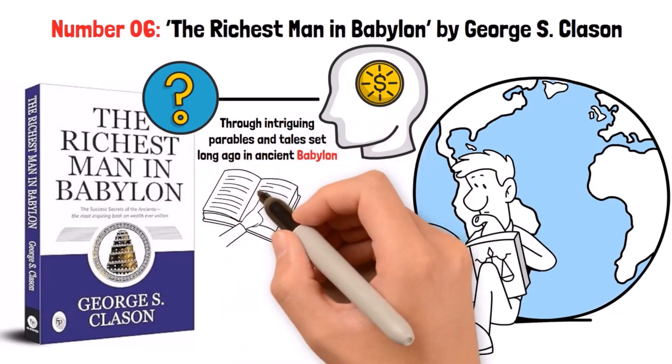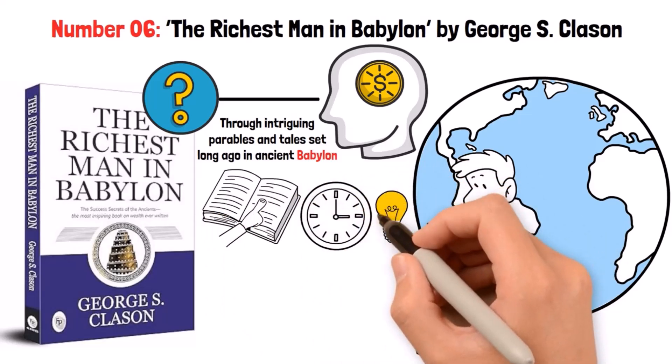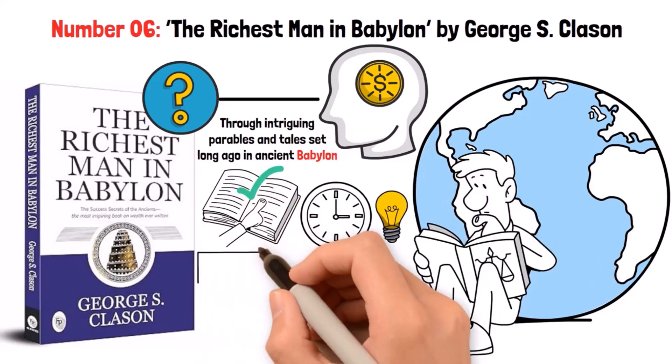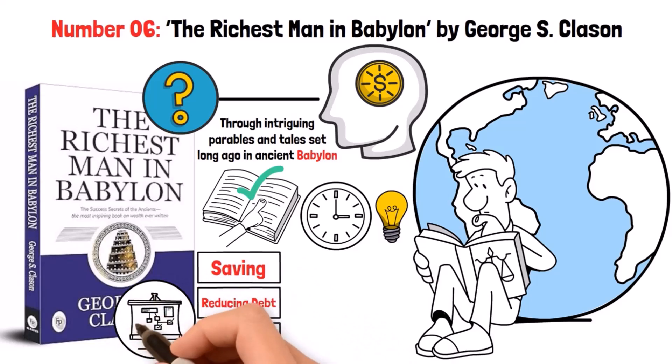By bringing the lessons to life in story form almost a century ago, the concepts have remained profoundly relevant. This book teaches saving, reducing debt, and smarter investing in a captivating way through various imagined scenarios. It shows that with diligence and strategy, financial success is available to all, no matter when or where.